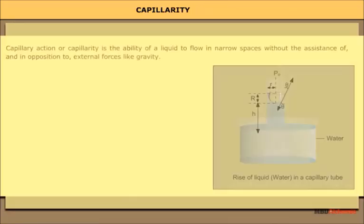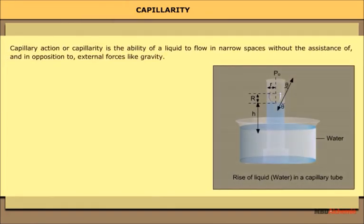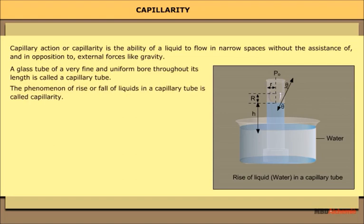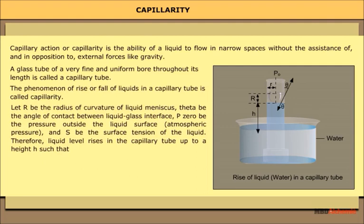Capillarity or capillary action is the ability of a liquid to flow in narrow spaces without, and in opposition to, external forces like gravity. A glass tube of very fine and uniform bore throughout its length is called a capillary tube. The phenomenon of rise or fall of liquids in a capillary tube is called capillarity. Let r be the radius of curvature of the liquid meniscus, theta the angle of contact, p₀ the atmospheric pressure, and S the surface tension. The liquid level rises to height h = S / (rho·g·r).